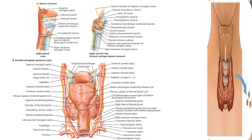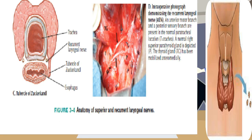The right RLN recurs around the right subclavian artery, and the left RLN recurs around the arch of the aorta. The RLNs ascend into the neck from the thoracic inlet, passing from lateral to medial into the tracheoesophageal groove. The left RLN enters the neck in a more medial location than the right RLN, which has a more oblique course. The RLN is identified inferior to the inferior thyroid artery, where its location is most constant, then crosses the inferior thyroid artery and maintains a paratracheal location for approximately 1 cm before passing posterior to the inferior pharyngeal constrictor muscle to enter the larynx.